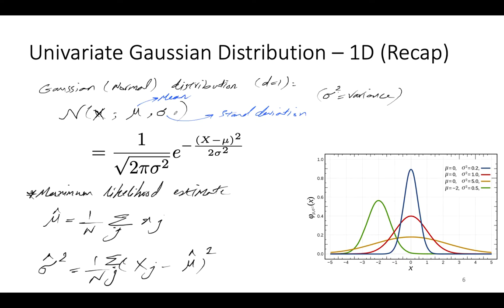The reason we use a normalizing constant is that the summation of the area underneath p(x)dx should equal 1. By this normalizing constant, we ensure the total probability is 1.